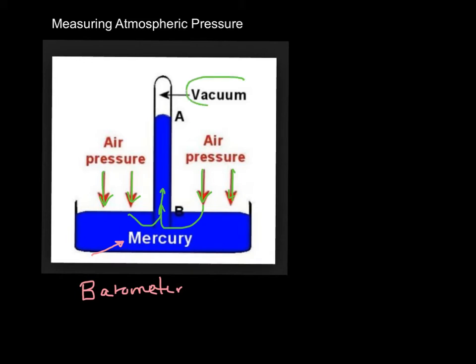And up here, we have a vacuum, which means we have nothing. It's not air. It's not oxygen. It's just plain nothing. So there's no pressure whatsoever pushing down. There's no pressure there at all. So if we can measure the height of this column of mercury, the height of it, that will tell us what the atmospheric pressure is.